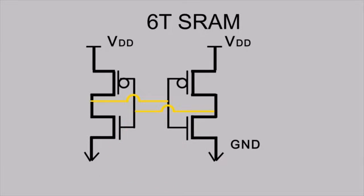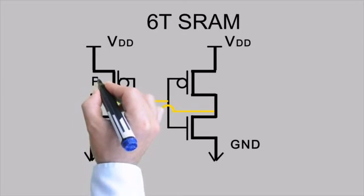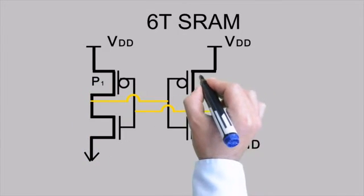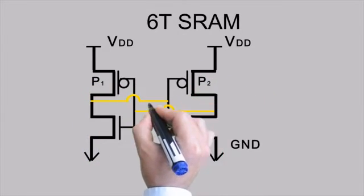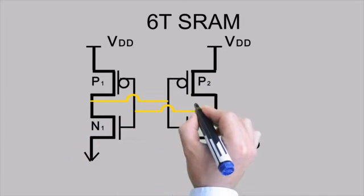Now let's name these inverters as well. Let's call this inverter 1. Let's call this inverter 2. Let's label all the transistors. Let this be P1. Let this be P2. Let this be N1. Let this be N2.